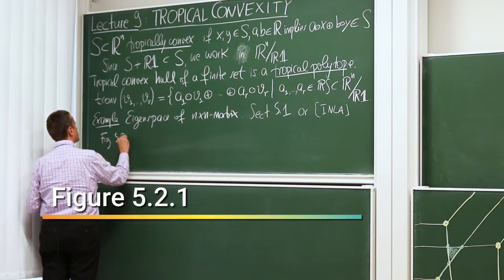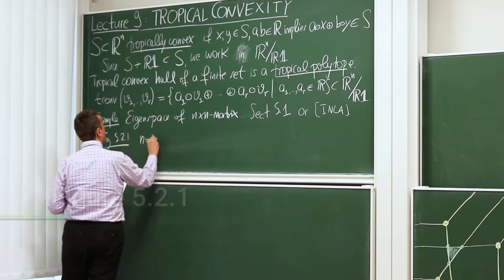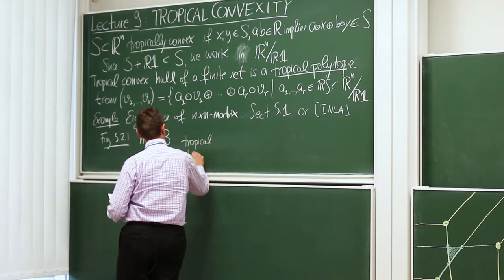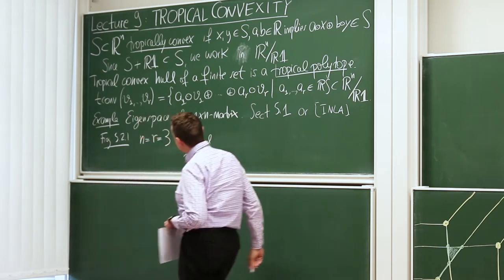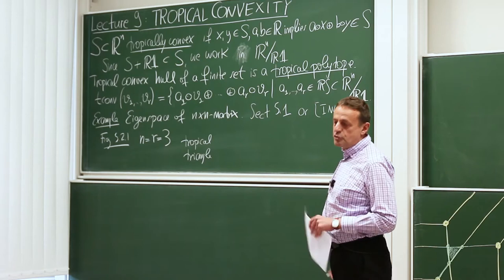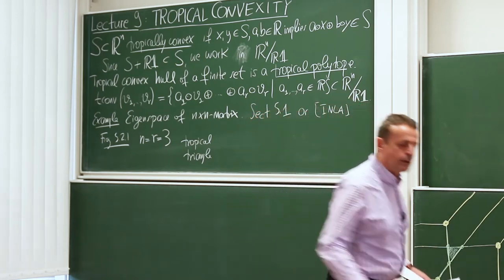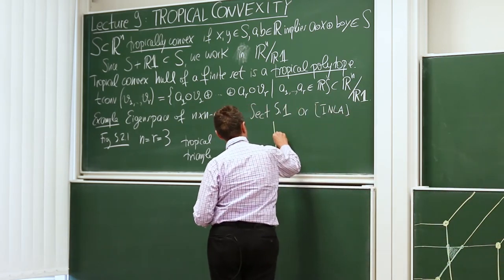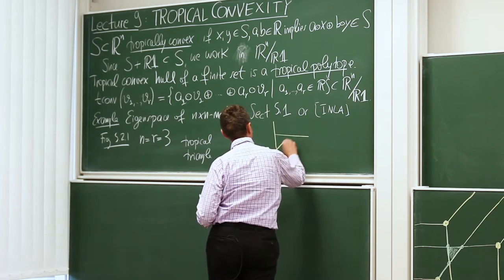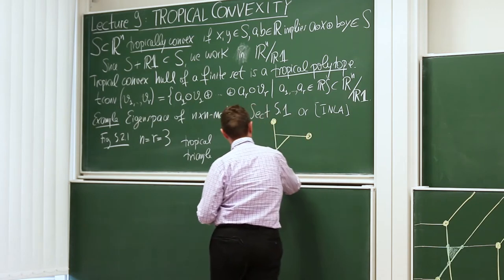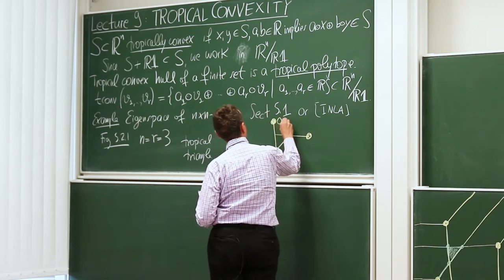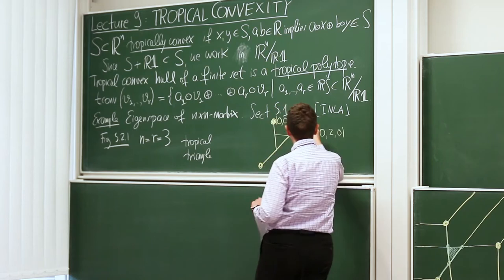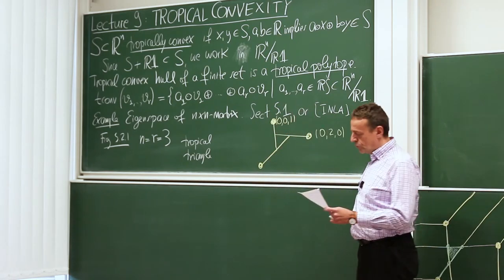Let's look at an example. This is figure 5.2.1 from the book, where both N and R are 3 — a tropical triangle. We plot three points with their homogeneous coordinates in the plane, drawn in yellow. There are three points: the point 0, 0, 1; the point 0, 2, 0; and with my convention of homogenizing the first coordinate to 0, the book's point 2, 1, 0 is the same as 0, minus 1, minus 2 after tropical scaling.